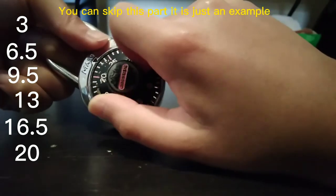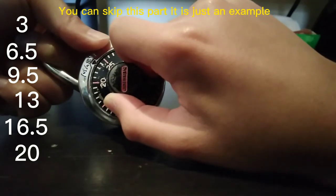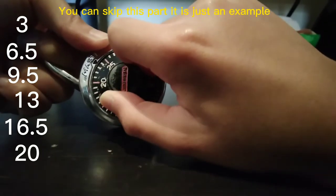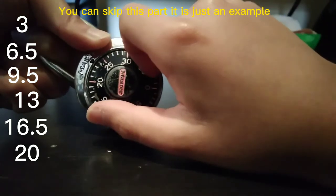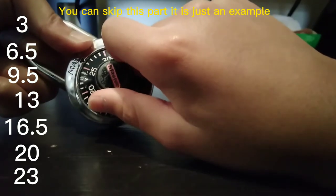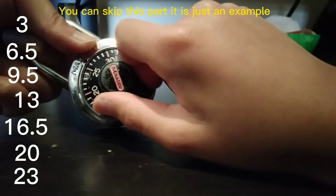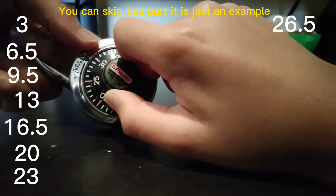Write that down. It's getting stuck between 22.5 and 23.5, the middle number is 23. Keep going. It's getting stuck between 26 and 27, that's 26.5.